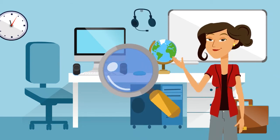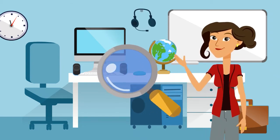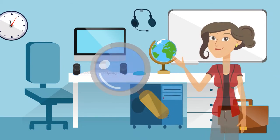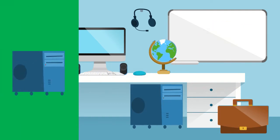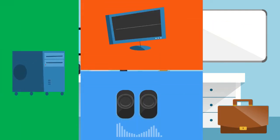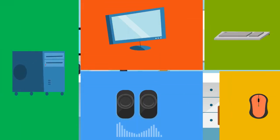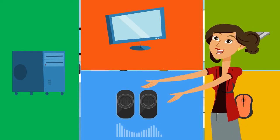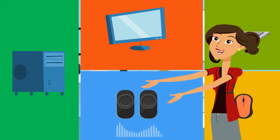Let's take a look at the primary hardware components that make up a computer. This includes the base unit, the monitor, the speakers, the keyboard and the mouse. Each part serves a purpose that allows us to operate and interact with the computer.